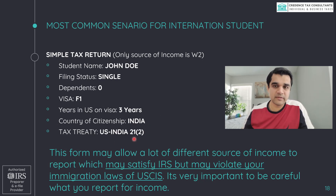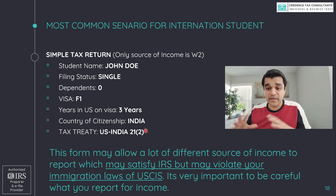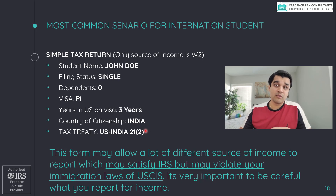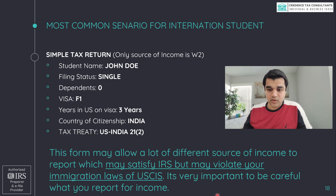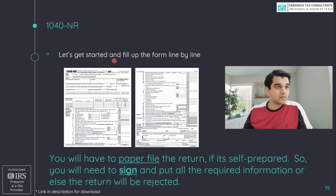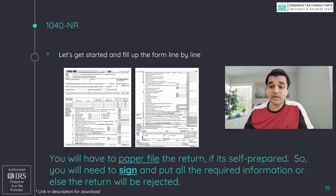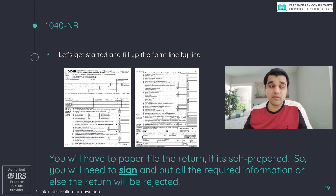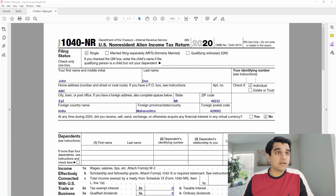I'm using India as the example because the US-India tax treaty allows for the standard deduction. If you're from another country, just replace the standard deduction with your country's applicable treaty exemption amount. Be careful: this form allows reporting of many income sources, but some may violate your USCIS immigration laws, so report only what you're legally permitted to earn.